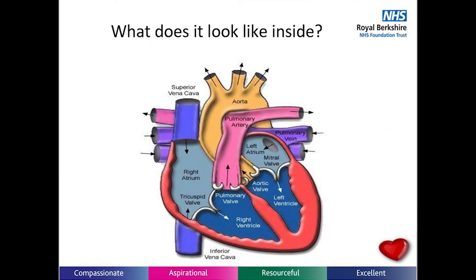If there is a problem with your heart valve, this is predominantly an issue with the aortic or mitral valve. You may have been told you have a heart murmur. The issues with the valves are usually if they have become floppy or stiff. Regurgitation is a floppy valve that does not close tightly and allows blood to leak backwards. Stenosis is a stiff valve that does not open wide enough and blood has to squeeze through. Signs and symptoms can include dizziness, shortness of breath, fatigue, chest pain, palpitations, and ankle swelling.